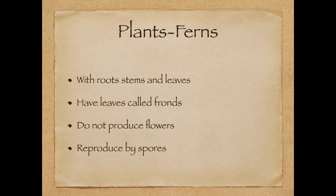Next is the plant kingdom. The plant kingdom has four classes, but we're going to talk about two today: ferns and flowering plants. Ferns are plants with roots, stems, and leaves. Their leaves are called fronds. They do not produce flowers and they reproduce by spores. Apart from that, they are similar to flowering plants. They have chloroplasts, which they use for photosynthesis.